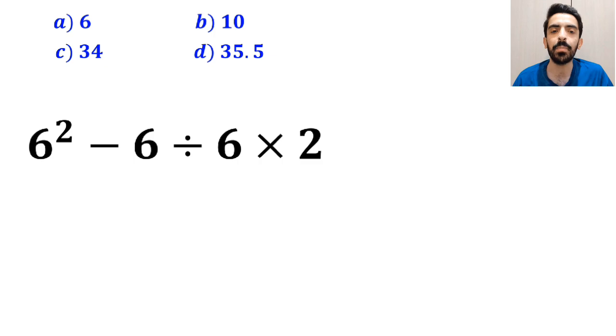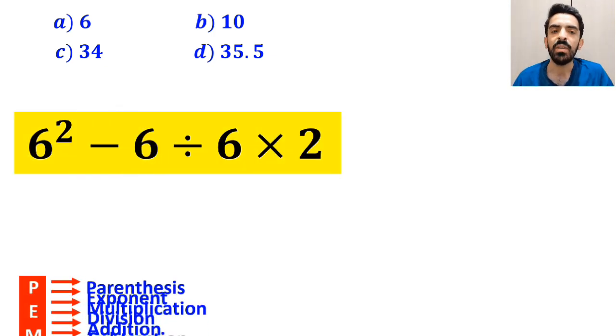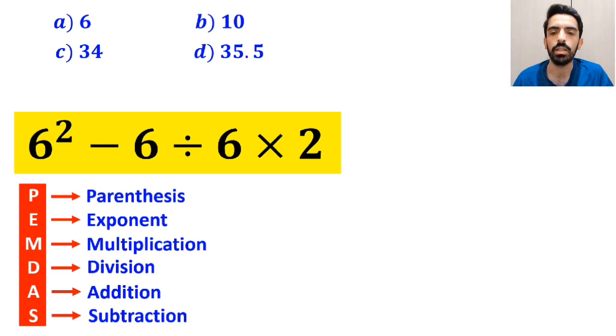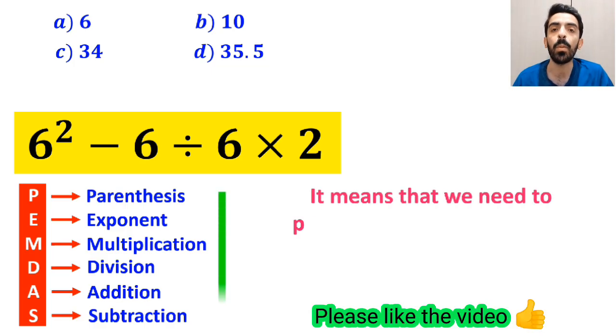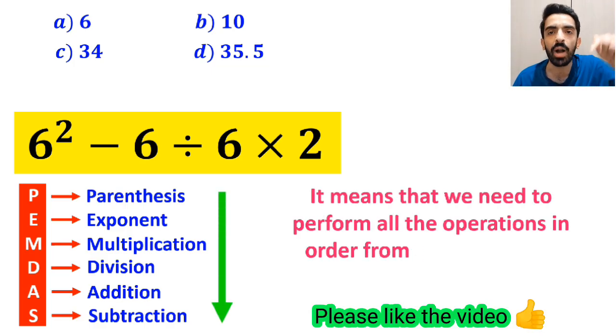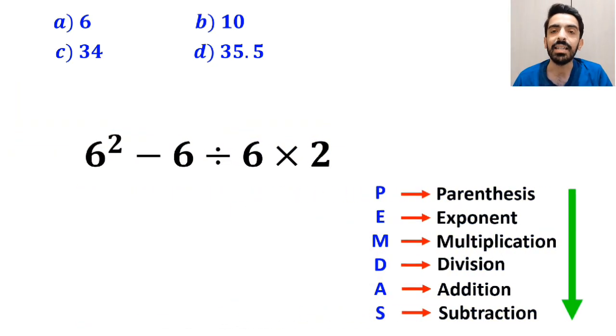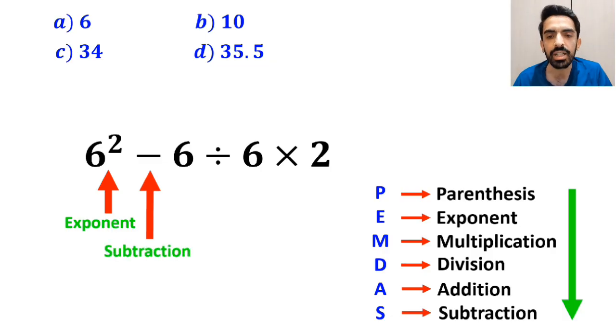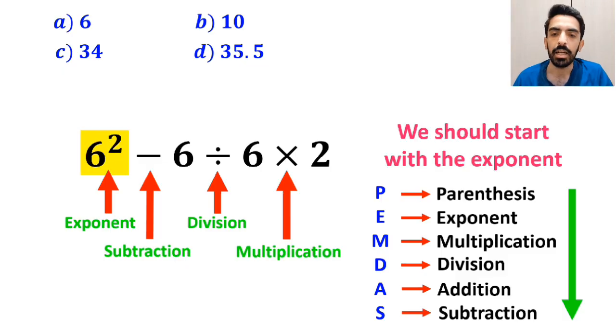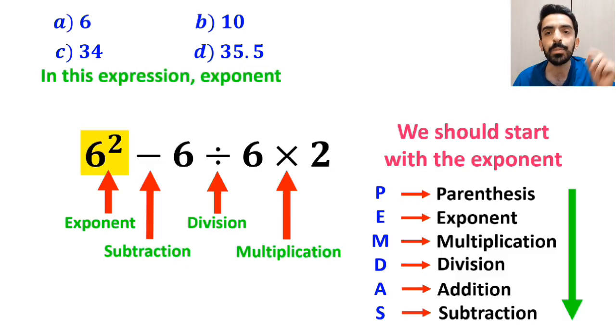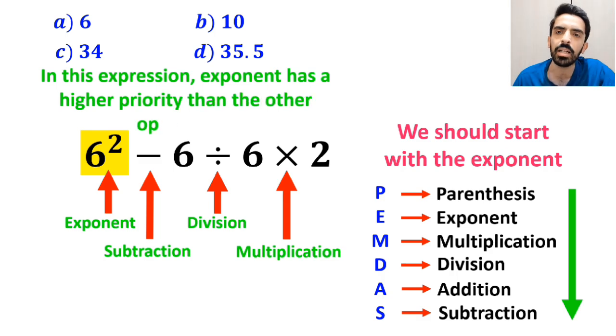Now, let me show you step by step how to solve this expression properly. To solve this problem, we must follow the PEMDAS rule. It means that we need to perform all the operations in order from top to bottom. As you can see in the image, in this expression, first we have an exponent, then a subtraction sign, followed by a division, and finally a multiplication. We should start with the exponent, because in this expression, exponent has a higher priority than the other operations.